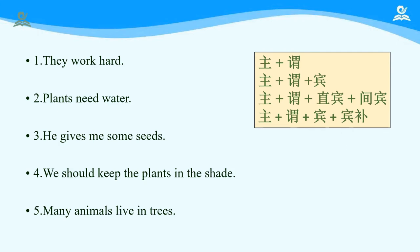现在请按下暂停键，用三分钟的时间思考这五个句子分别属于今天讲的四种基本句型的哪一种。OK, time is up. Let's check it. The first one: They work hard. Subject + Verb，主谓结构。主语 they，work 是谓语，而 hard 是副词，用来形容 work 的程度——他们工作很努力。